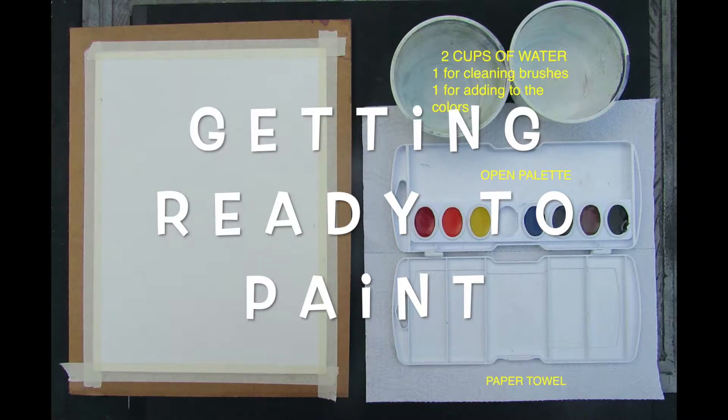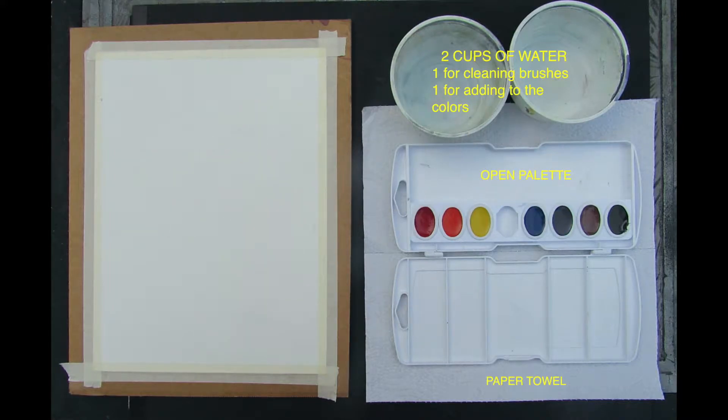Before we start to paint, we want to go ahead and set up our paint station. What we have pictured here is our paper that we've prepared by stretching, our palette that's opened up to the colors that we'll need, and two cups of water.